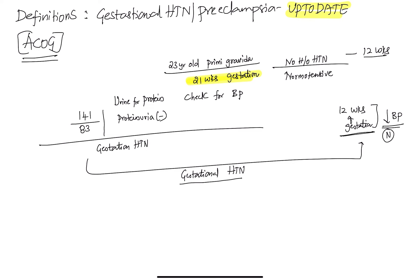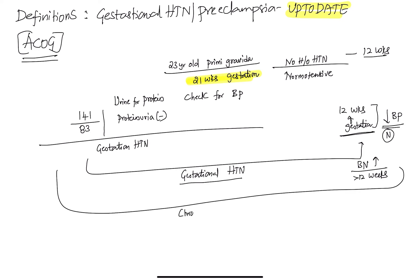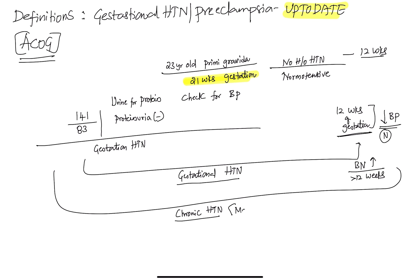When you follow the patient till 12 weeks postpartum, if BP is still high after 12 weeks, then maybe she is a case of chronic hypertension. During early pregnancy, cardiovascular changes can mask high BP because BP actually decreases during pregnancy. So she may be a patient of chronic hypertension that we were unable to diagnose before, or the pregnancy masked it — and now we can see the patient has developed hypertension.